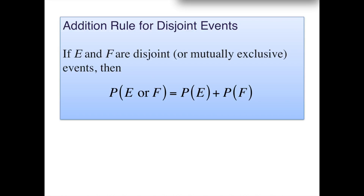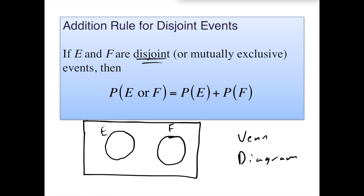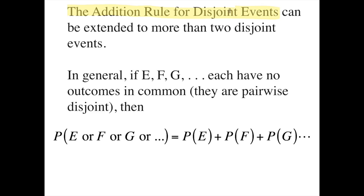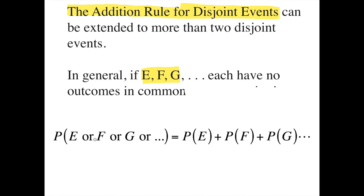Here's the addition rule: if you have two events that are mutually exclusive — also called disjoint — you can find the probability of one or the other by adding the probability of one to the probability of the other. This rule also works for more than two mutually exclusive events. If we have a bunch of events with no outcomes in common, the probability of one or another is just all of their probabilities summed together.